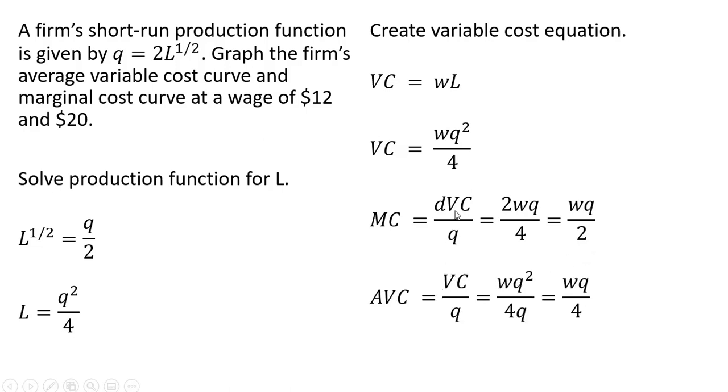Average variable cost is variable cost divided by quantity. So taking our variable cost equation and dividing it through by Q, we end up with the following.